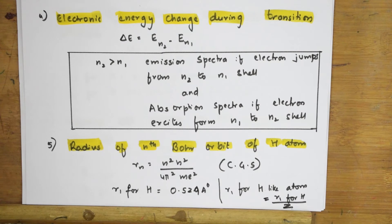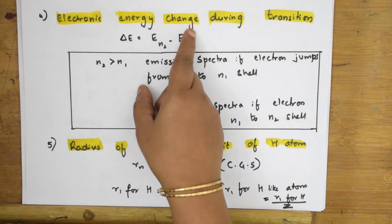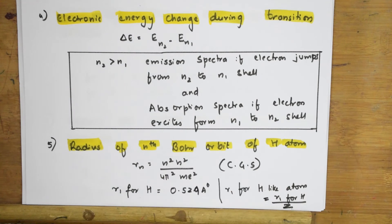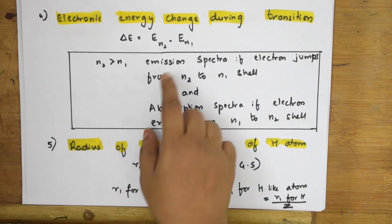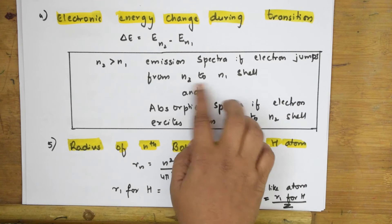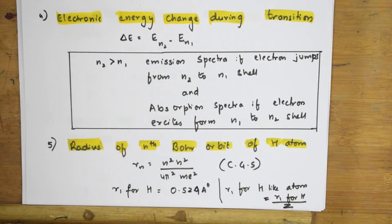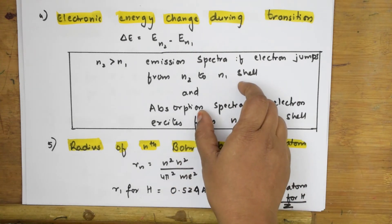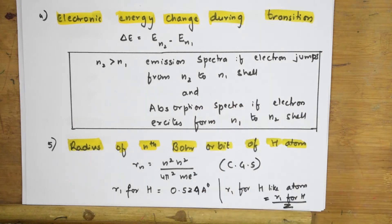The next formula is electronic energy change during transition, which comes up a lot in hydrogen spectrum numericals. We know ΔE = E(n2) - E(n1), where n2 is always greater than n1. Two cases to remember: in an emission spectrum, the electron jumps from n2 down to n1 and emits energy radiation; in an absorption spectrum, the electron is excited from n1 up to n2. Check whether the numerical gives emission or absorption before applying the formula.